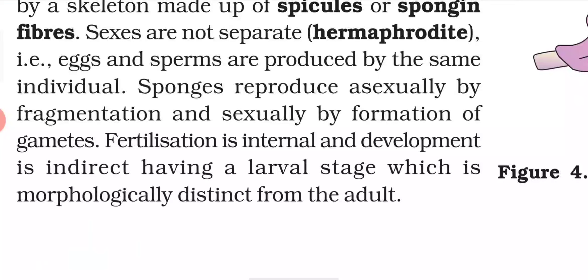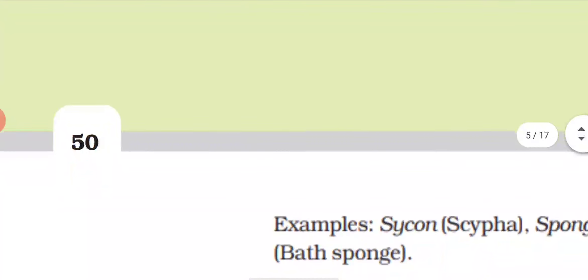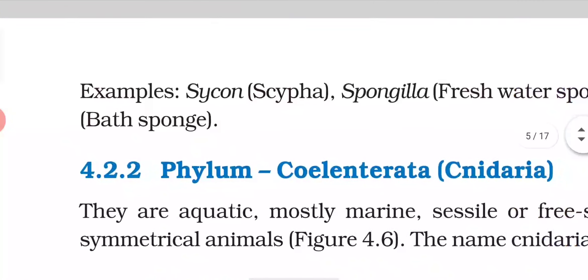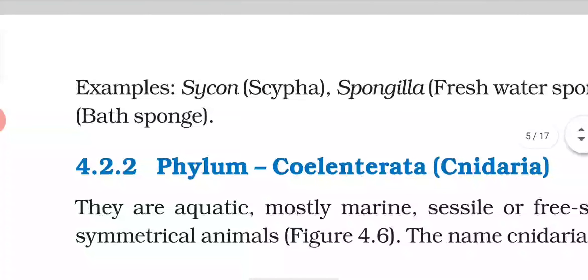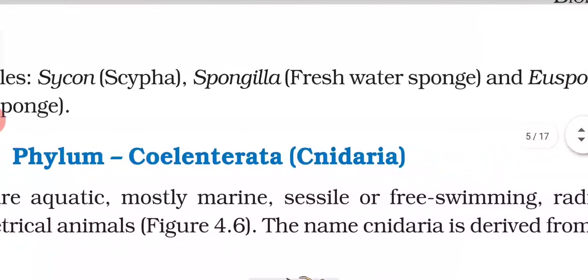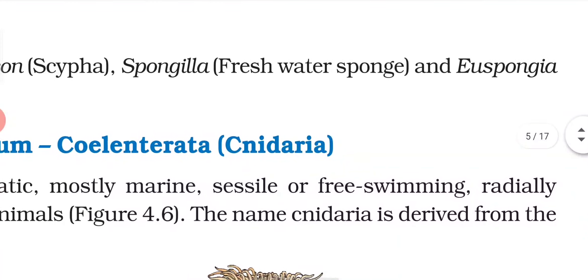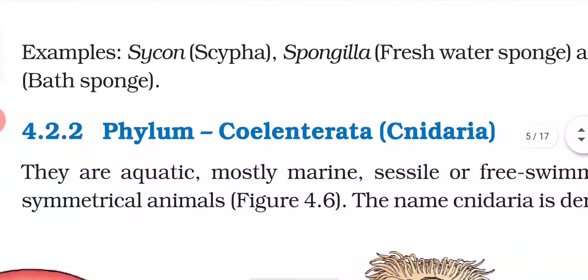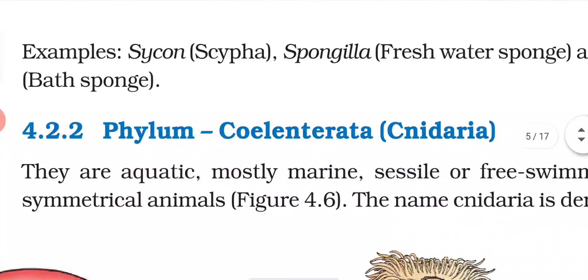Some examples of Porifera are Sycon, Spongilla — which is found in fresh water — and Euspongia, which is the bath sponge.